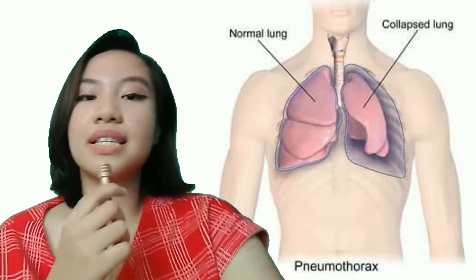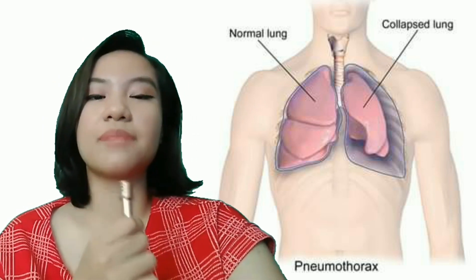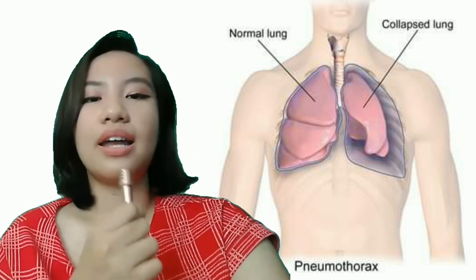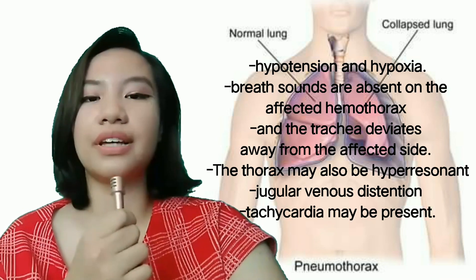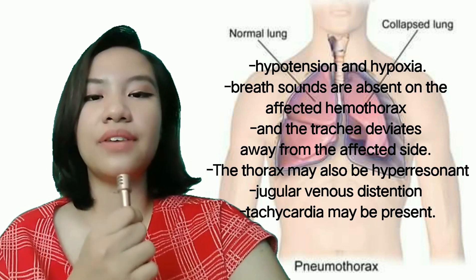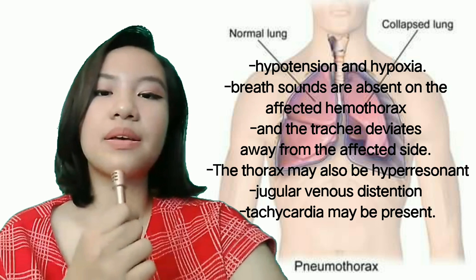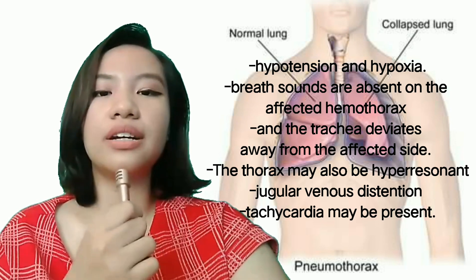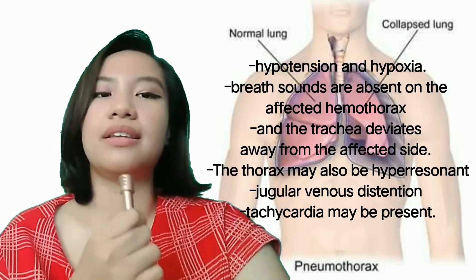Diagnosis and assessment of tension pneumothorax is classically characterized by hypotension and hypoxia. On examination, breath sounds are absent on the affected hemithorax, and the trachea deviates away from the affected side. The thorax may also be hyperresonant, and jugular venous distension and tachycardia may be present.